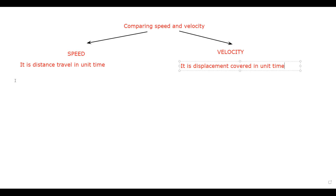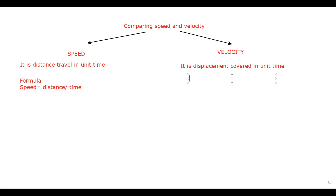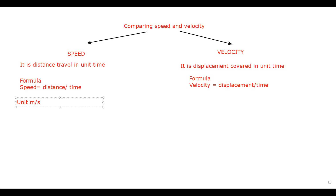The SI base unit for both speed and velocity — the formula for speed is distance divided by time, and the formula for velocity is displacement divided by time. The unit is meter per second, or ms⁻¹. That's the same thing. There can be other units like kilometer per hour, but the SI unit — the System International unit — is meter per second, or ms⁻¹.